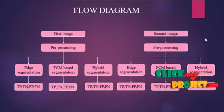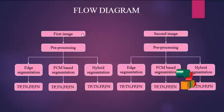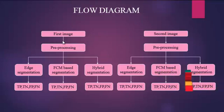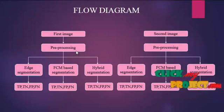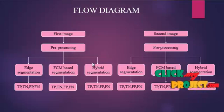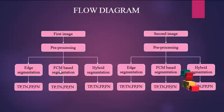Now let us discuss about the flow diagram of the process. First of all, in this process, we take two MRI images. We take the input image and then apply the pre-processing step. In the pre-processing step, we use the median filter for removing the noise. Then the pre-processing step splits into three steps: edge-based segmentation, FCM-based segmentation, and hybrid segmentation.